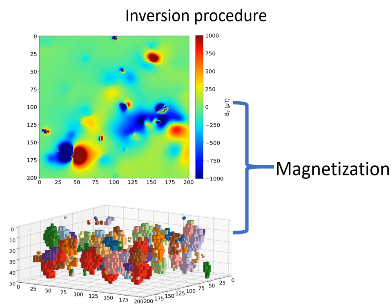To that end, we ran a lot of different numerical models, which differ in grain density, sampling rate, noise level, domain size, and thickness. We start by randomly placing grains with a given magnetization in a model.